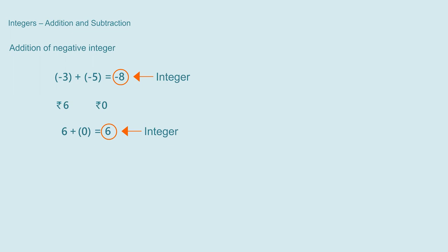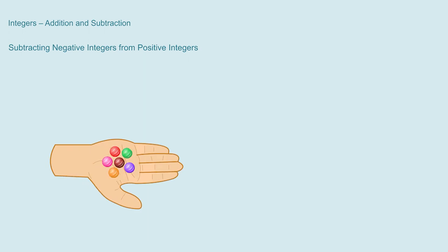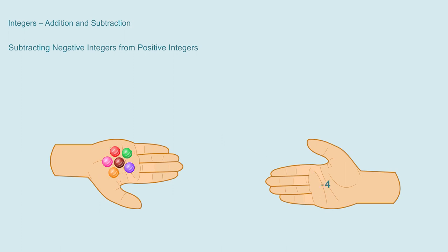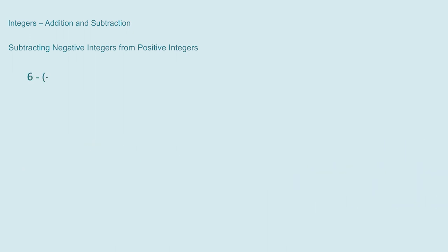Now if we have to subtract negative integers from positive integers, what will happen? Suppose I have 6 sweets with me and I am going to give my friend minus 4 sweets — what does minus 4 sweets mean? When I give minus 4 sweets to my friend, he will have minus 4 sweets, which means he will give me 4 sweets. So when I say I gave minus 4 sweets to my friend, it actually means he gave me 4 sweets, and I will have 10 sweets. We write this as 6 minus minus 4 equal to 10, that is 6 minus minus 4 equal to 6 plus 4.